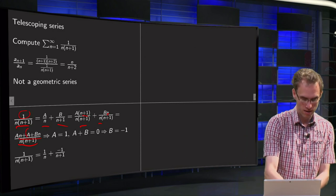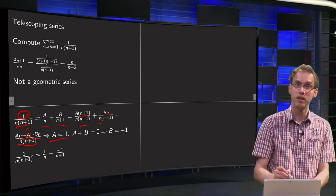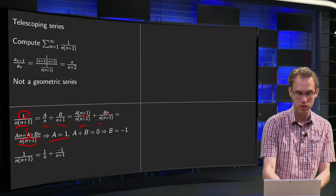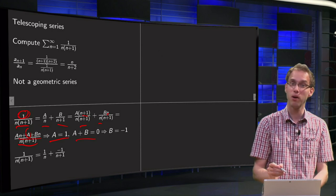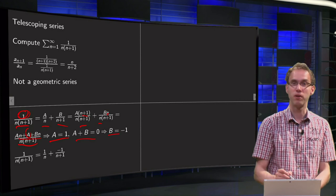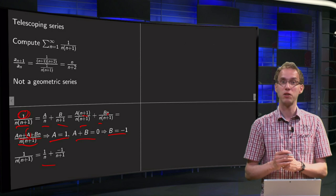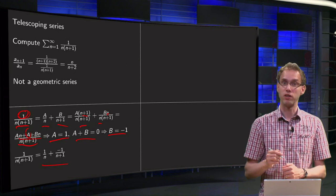So a has to be equal to the 1 over here, and a plus b times n has to be equal to 0 times n, so a plus b has to be equal to 0. So we find because a equals 1, b equals minus 1, and we can factorize 1 over n times n plus 1 as 1 over n plus minus 1 over n plus 1.